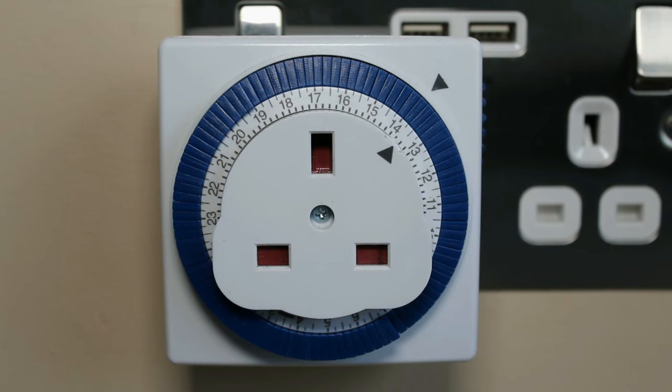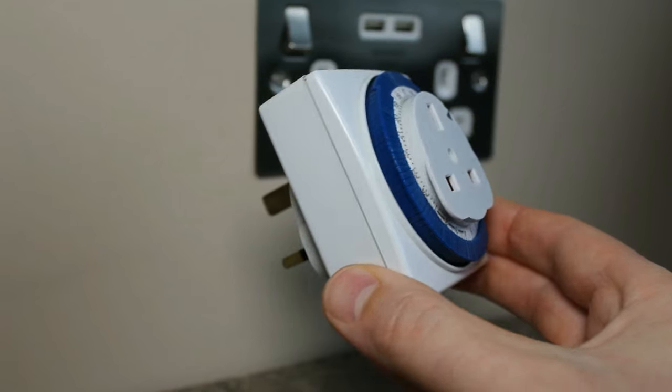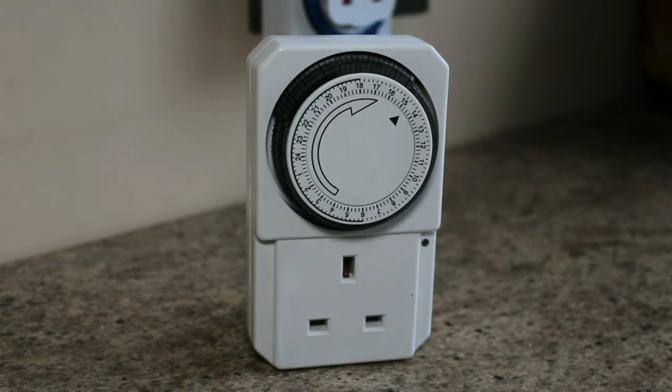In this video I'm going to show you how to use and set up a mechanical timer switch. They come in two different forms. You've got one where the plug for the appliance goes through the centre of the timer, and one like this where the plug actually goes underneath the timer.